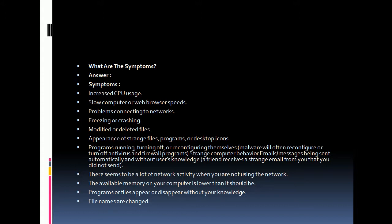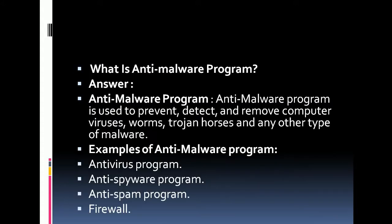Additional symptoms include strange computer behavior, email messages being sent automatically without your knowledge — a friend receives an email from you that you did not send. There also seems to be a lot of network activity when you are not using the network, lower available memory than expected, and programs or files appearing or disappearing without your knowledge, or file names being changed.